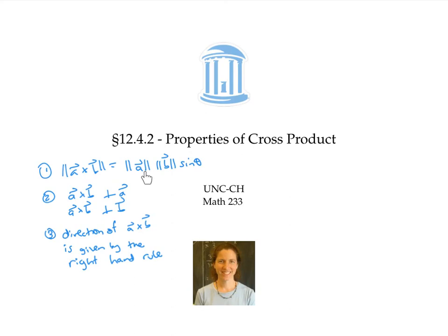In this video, I proved the length formula for cross product, and I proved the fact that A cross B is perpendicular to both A and B. I showed that the direction of A cross B is given by the right-hand rule in one example where A was i and B was j. And I gave an intuitive argument for why the direction of A cross B should be given by the right-hand rule in general.